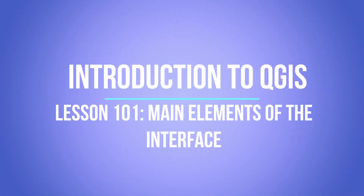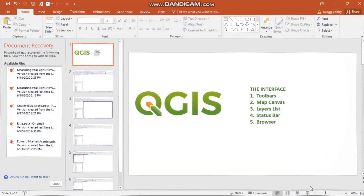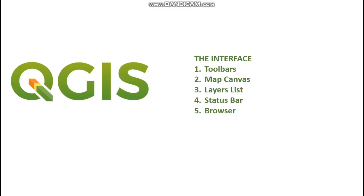The basis of this tutorial is to understand the user interface of this software. How does the Quantum GIS interface work? The main elements of the interface are as follows.